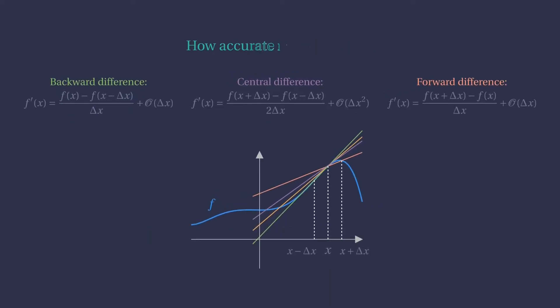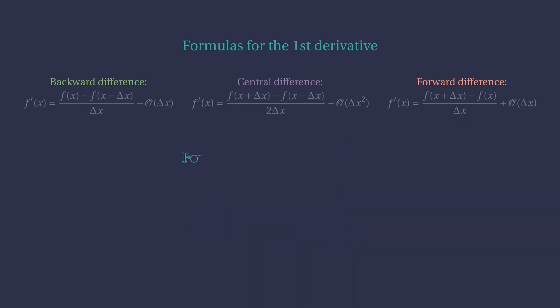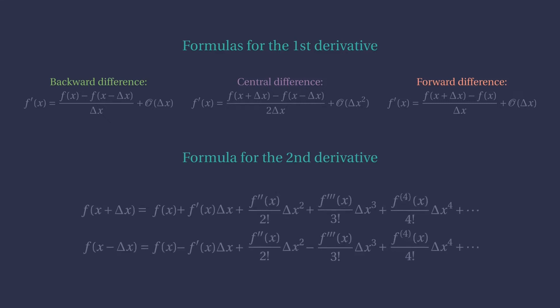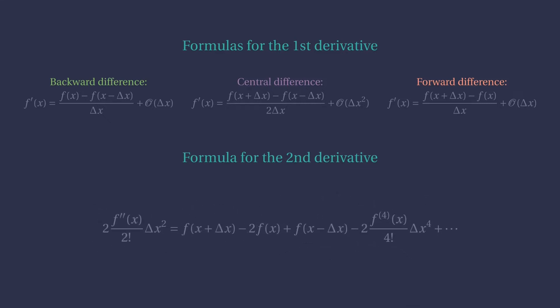We can also apply a similar rationale to the second derivative. But now, we add the two Taylor expansions. After some rearranging, we find the central difference approximation to the second derivative, which is also second-order accurate.